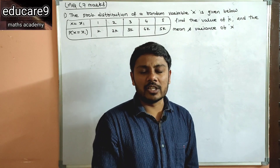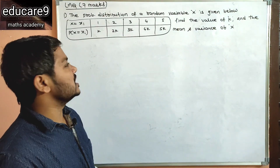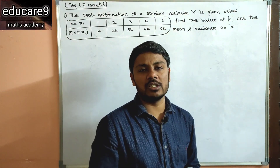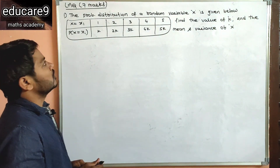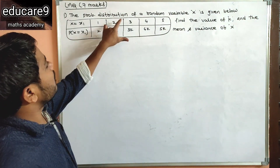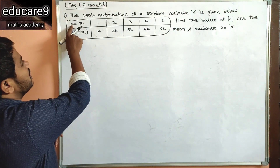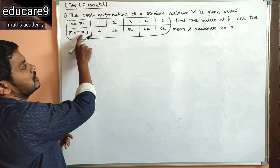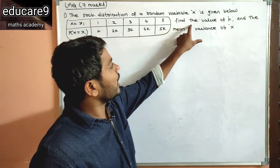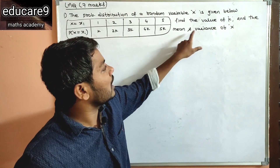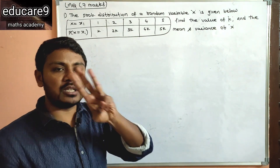Hi, hello everyone. For this session we will discuss a few 7-mark questions. These are very important questions — definitely one will come in the examination. The first one: the probability distribution of a random variable X is given. These are the random variable values and these are the probability distribution values. You have to find the value of K, and the mean and variance of X.